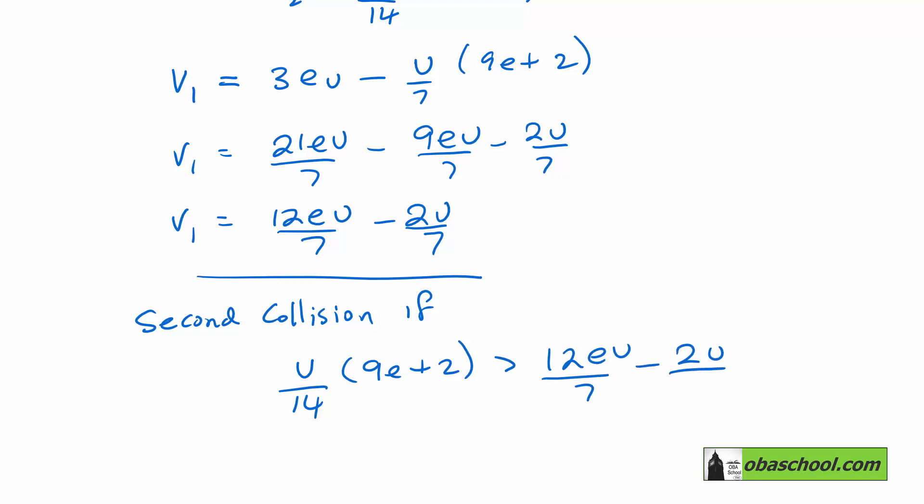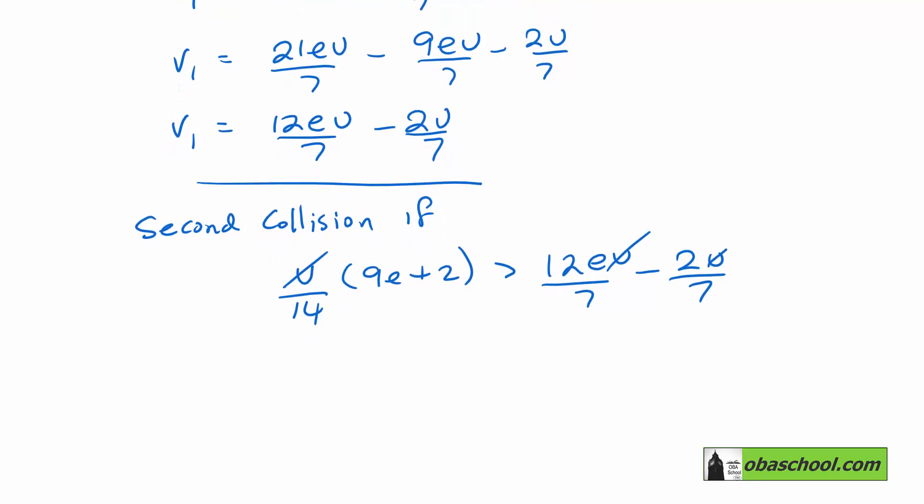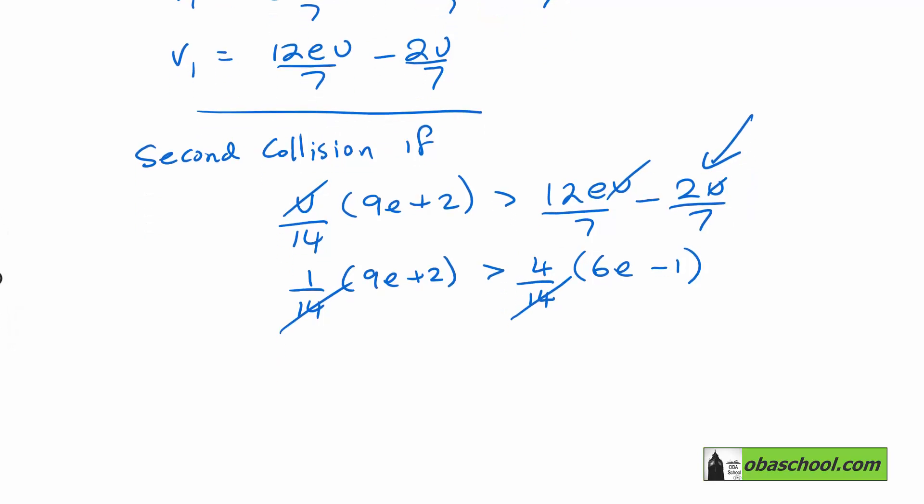One thing we can do here is get rid of all the U's. And then we have 1 over 14, 9E plus 2 would be greater than 4 over 14, 6E take away 1. So that's just multiplying top and bottom of that by 2 and then just factorizing. And of course, we don't need the 14s at that point. And so we have 9E plus 2 is more than 24E take away 4.